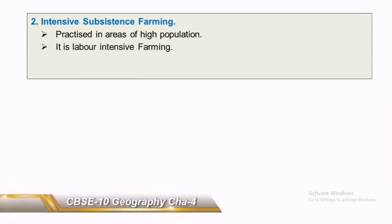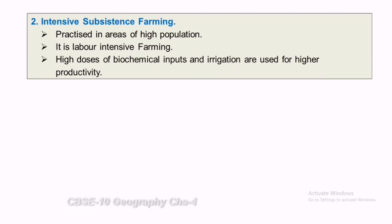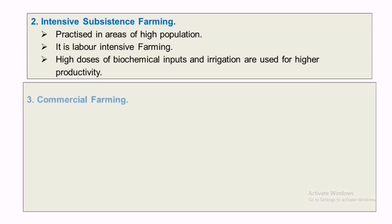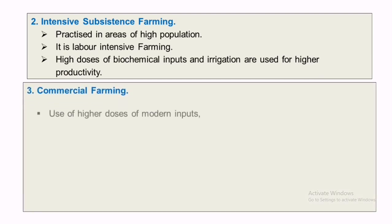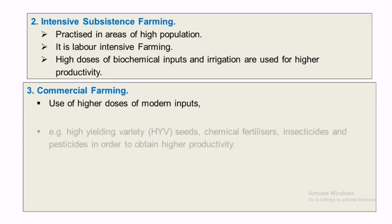The second type of farming is intensive subsistence farming. It is practiced in areas of high population. It is a labor-intensive farming where high doses of biochemical inputs and irrigation are used for higher productivity. The third type of farming is commercial farming, which uses higher doses of modern inputs.